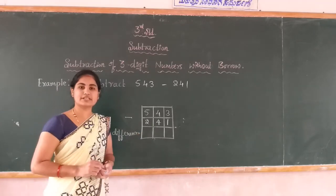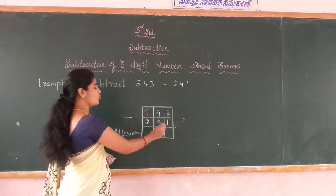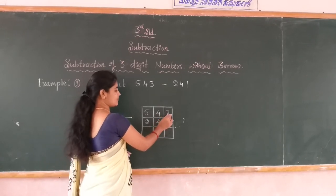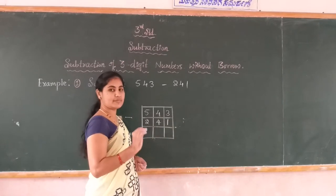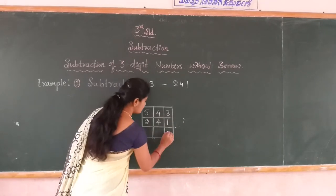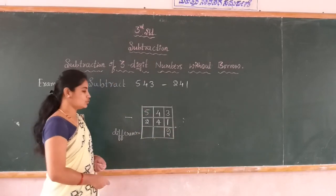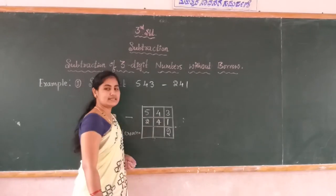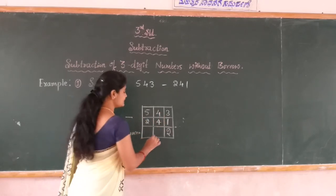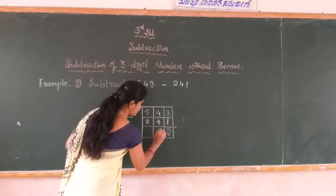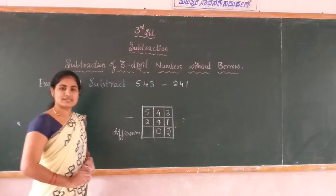You start the subtraction from which place? Ones place. First you start the subtraction from the ones place. 3 minus 1 is how much? 3 minus 1 is 2. Next you come to the tens place: 4 minus 4 is 0.